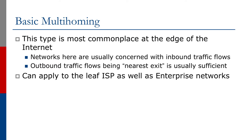This type of basic multi-homing is the most common found at the edge of the internet. Networks here are usually concerned with inbound traffic flows. Outbound traffic flows are usually nearest exit, and that's quite often enough for most of these edge networks to deal with. This could apply for a leaf ISP, or could apply for an enterprise network or university campus and so on.